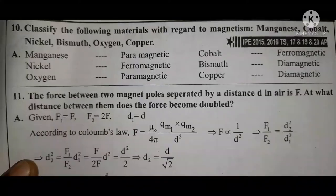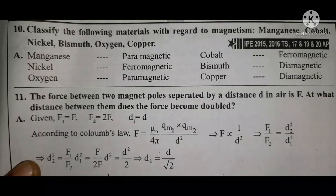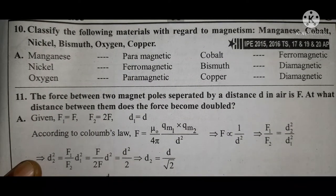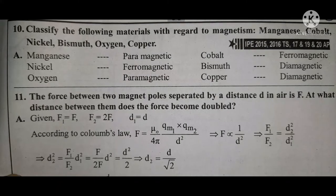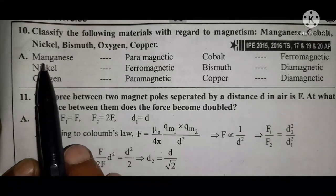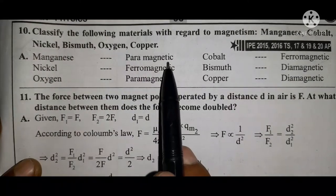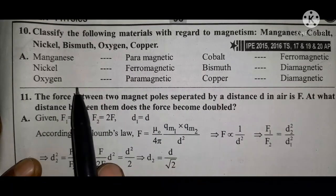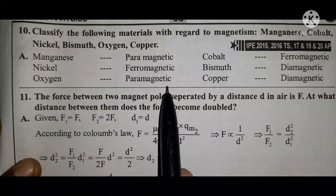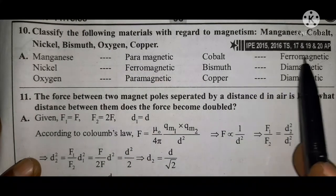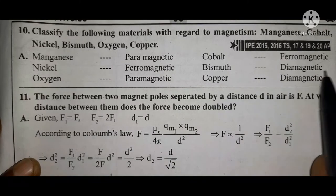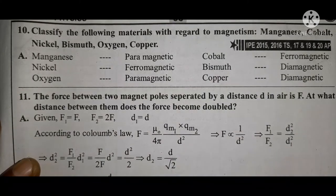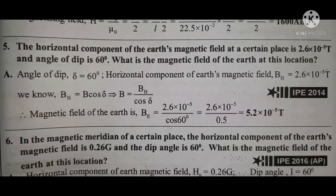Question ten: Classify the following materials with regard to magnetization — manganese, cobalt, nickel, bismuth, oxygen, copper. Manganese is a paramagnetic material. Nickel is ferromagnetic. Oxygen is paramagnetic. Cobalt is ferromagnetic. Bismuth is diamagnetic. Copper is diamagnetic.